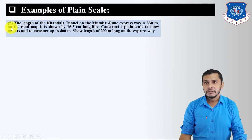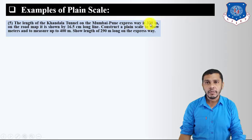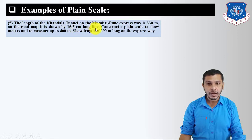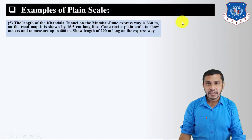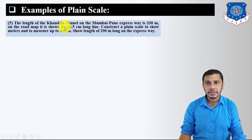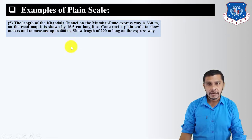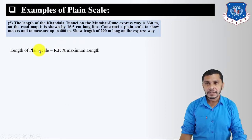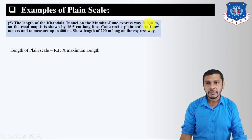Example 5: The length of the Khandala tunnel on the Mumbai-Pune Expressway is 330 meters, shown by a 16.5 cm line on the map. Construct a plane scale to show meters, long enough to measure up to 400 meters, and show a length of 290 meters. RF = 16.5 cm / 330 m. Length of scale = RF × 400 m.